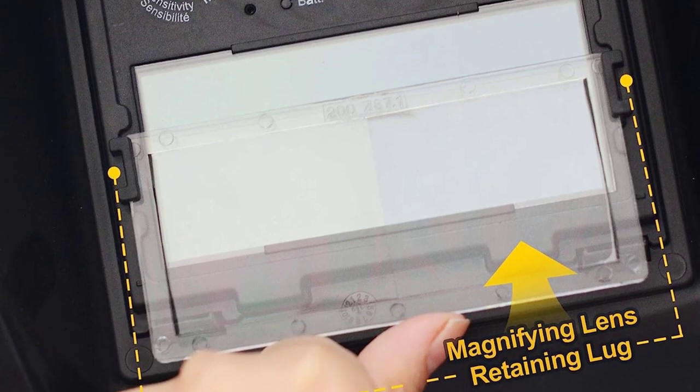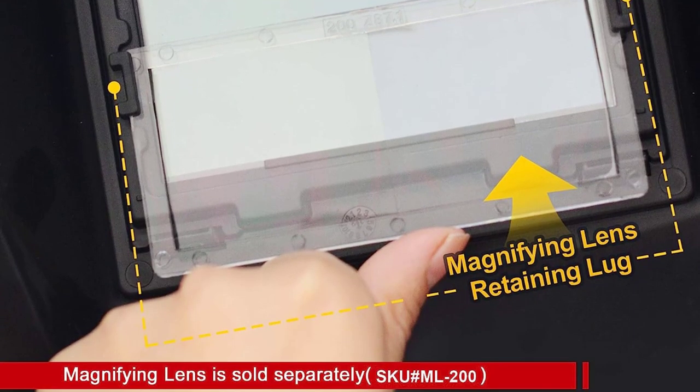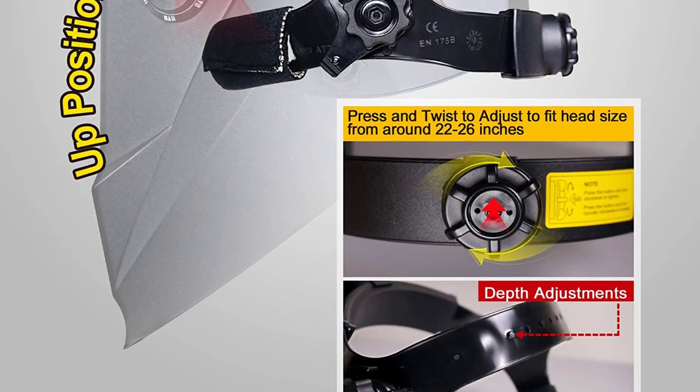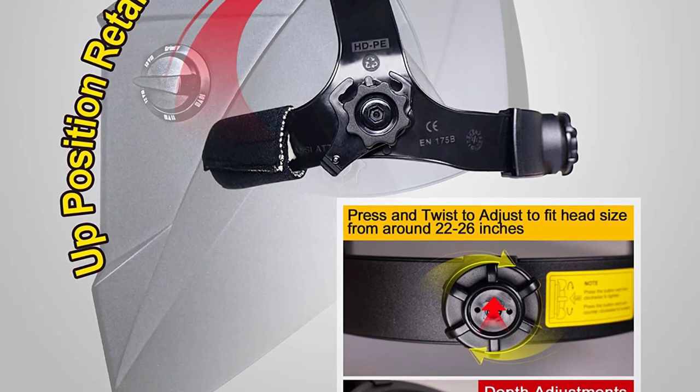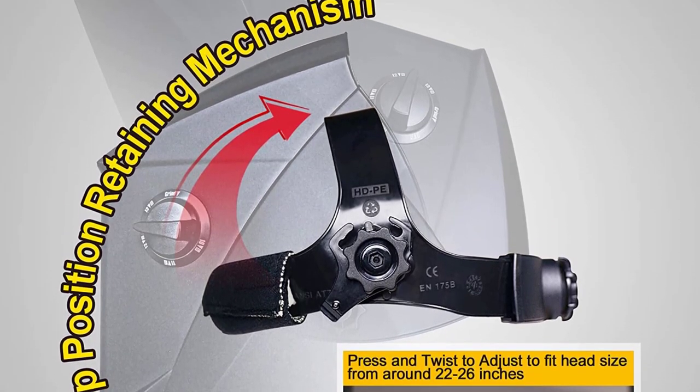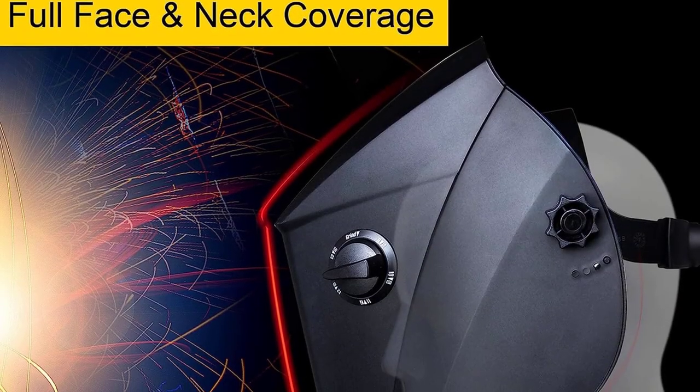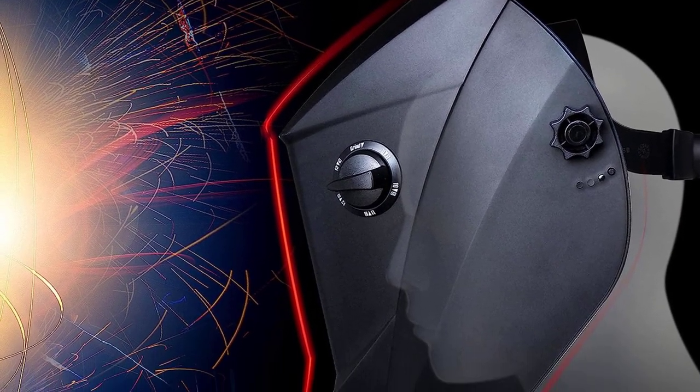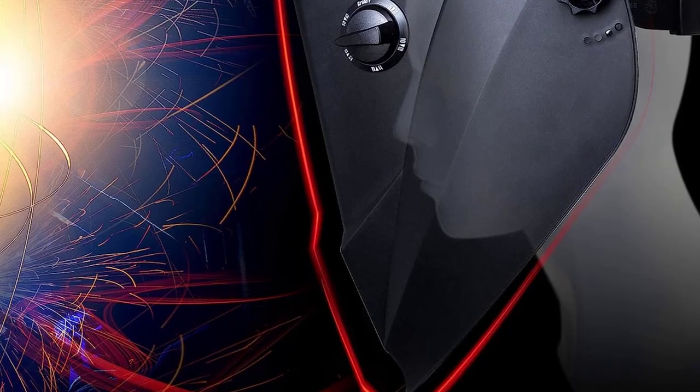This ultra-lightweight product comes with several interior and exterior lenses available on purchase. The viewing area of the helmet is 3.86 by 1.78 inches. For first-time welders, I strongly recommend this item for it comes with an instruction manual included.